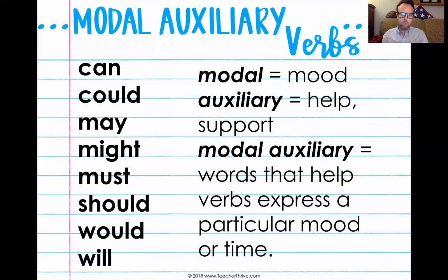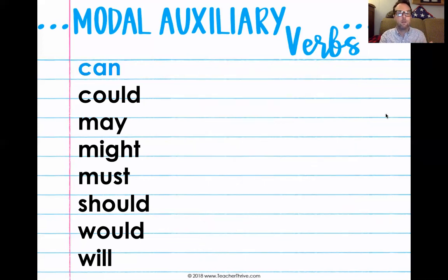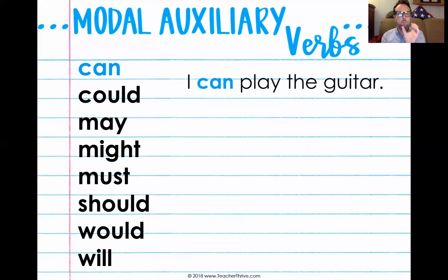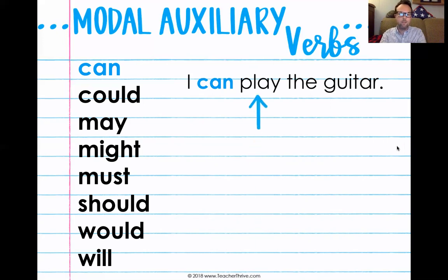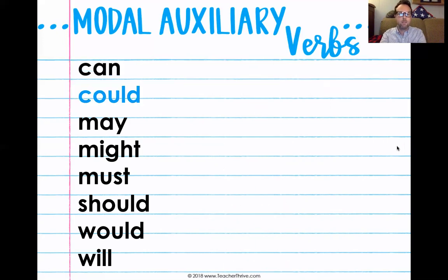An example of 'can' in a sentence: 'I can play guitar.' Play is our main verb — it's the action that person is doing. But by putting the word 'can' in, it helps to modify the word 'play.' It shows that I'm not just doing it right now — I have that ability to play the guitar. Play is the main verb; can is the helper.